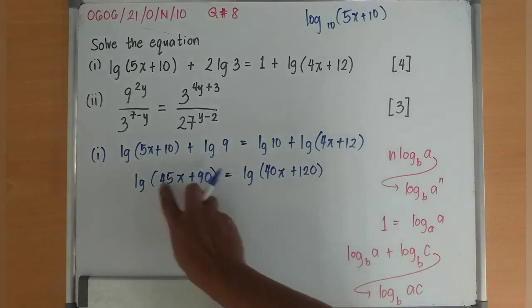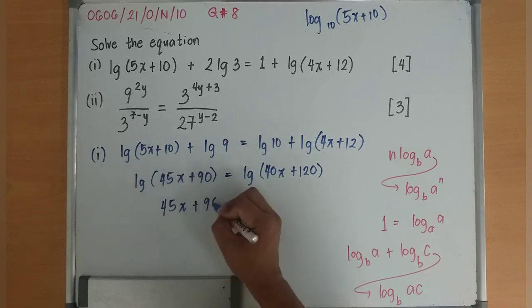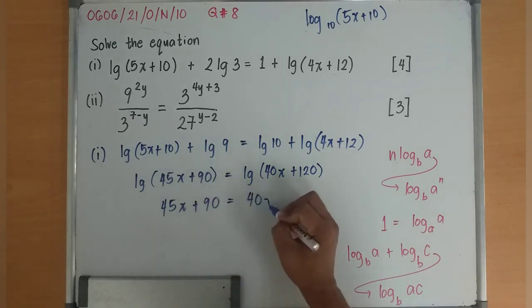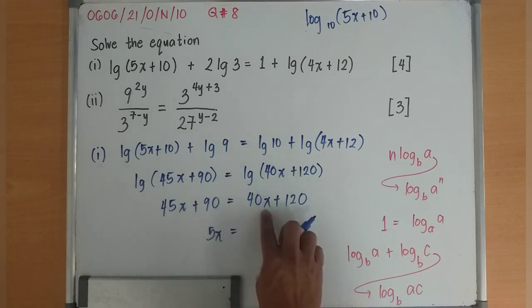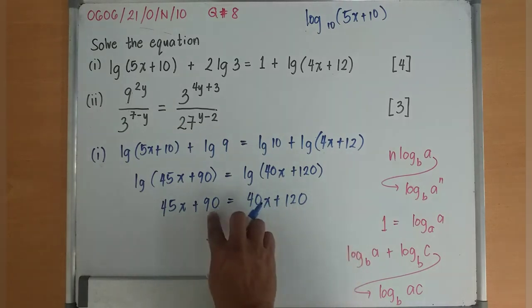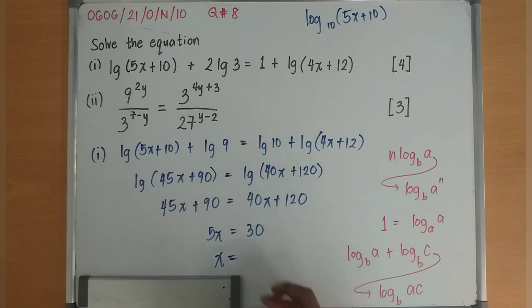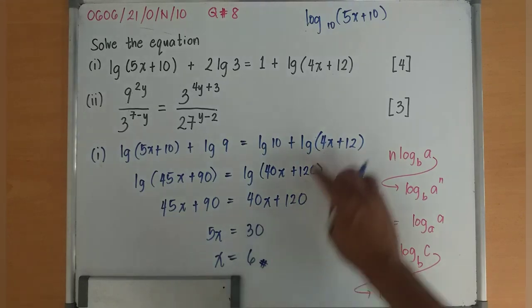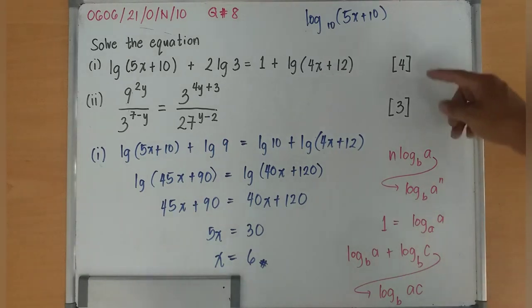Then I can get rid of the logarithms. I have 45x plus 90 equals 40x plus 120. 5x equals 30. Thus, x equals 6. So the value of x in the first equation is 6.